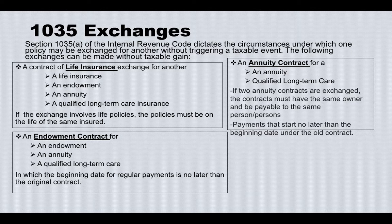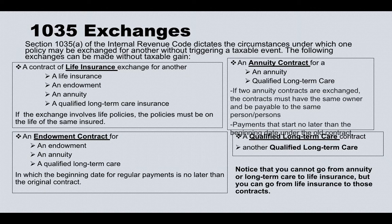An annuity contract can be exchanged to another annuity or to a long-term care policy. You can see the options become fewer and fewer. If two annuity contracts are exchanged, they must have the same owner and be payable to the same person or persons, with payments starting no later than the beginning date under the older contract.